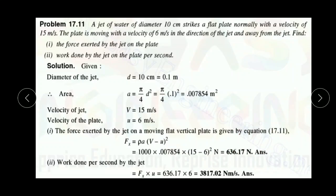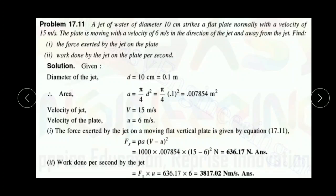Now for the second part — work done by the jet on the plate per second. Work done = force × displacement. Work done per second = force × displacement per second = force × velocity. Therefore, work done per second = Fx × u = 636.17 × 6 = 3817.02 N·m/s.